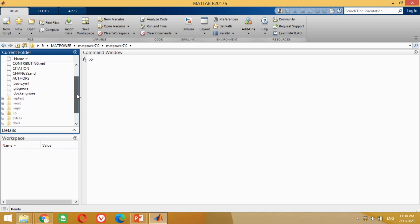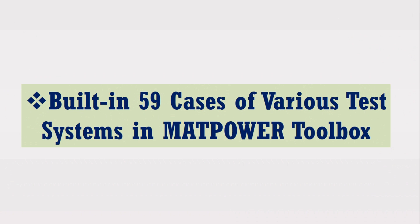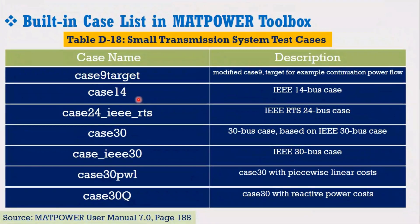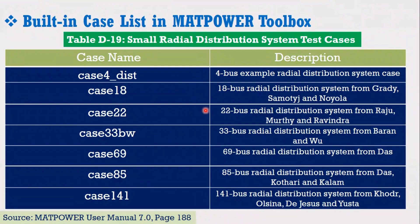MATPOWER is an extremely useful toolbox for power system engineers to do their research. This toolbox provides 59 built-in MATLAB programs of various famous test systems. All these MATLAB programs of various test systems are shown in the data folder of the MATPOWER toolbox. You can directly use these programs by double clicking on them. The table provides the list of all the standard transmission test systems, including the IEEE 9 bus system, IEEE 14 bus system, IEEE 30 bus system, IEEE 57 bus system, IEEE 118 bus system, and IEEE 300 bus system.